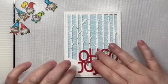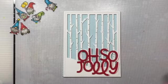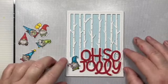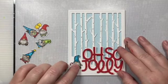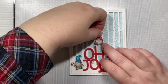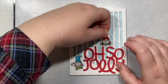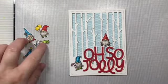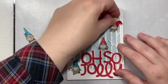And if I added the adhesive to the Oh So part of the sentiment, it might stick to the background, which would not be good because the trees are on a different layer than the background. So that's why I only applied adhesive to the bottom part of the Jolly there. Okay. So now we're going to arrange our little gnomes.